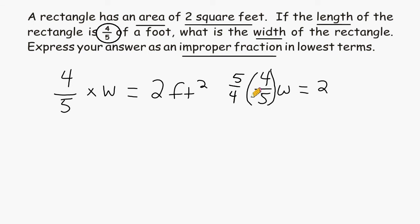And we are going to do the same thing to the opposite side as well. So we're going to take 2 and express it as a fraction, which is 2 over 1, and multiply it by 5 quarters like we did on the other side.